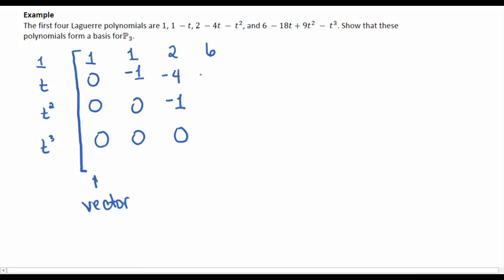And then finally, 6 minus 18T plus 9T squared minus 1T cubed. So now we can see we have a pivot in every single column, which tells me that there are no free variables, so these things are linearly independent.